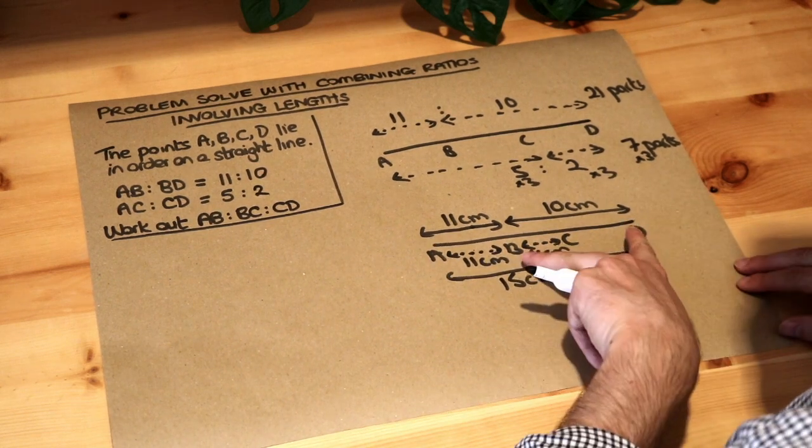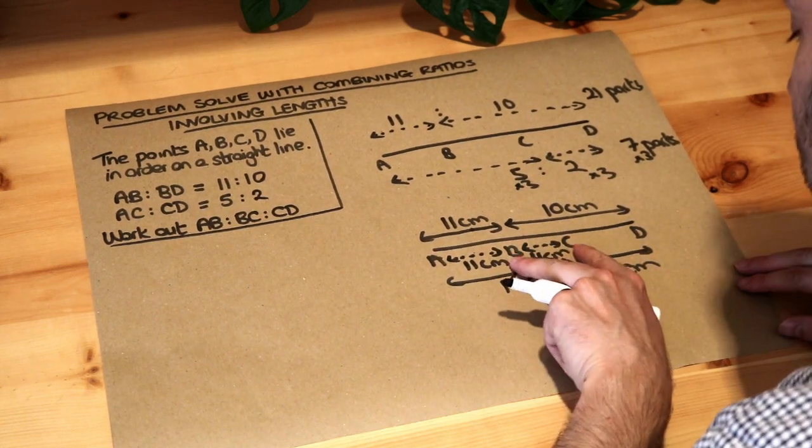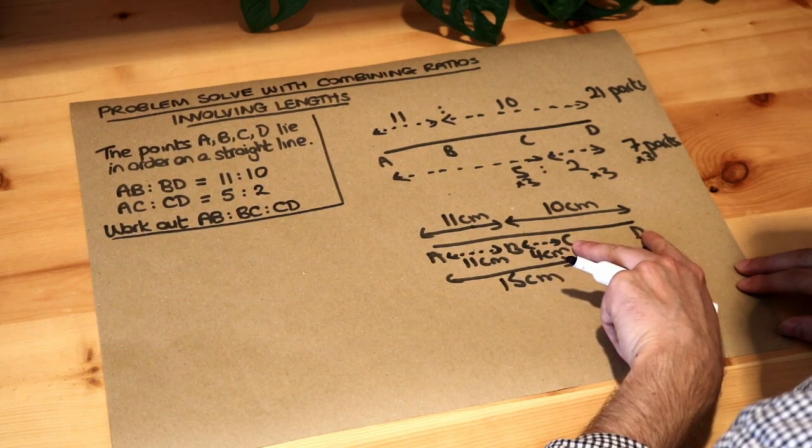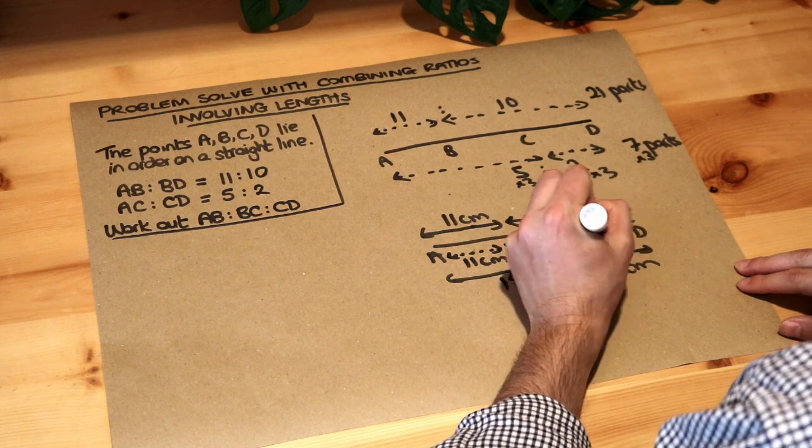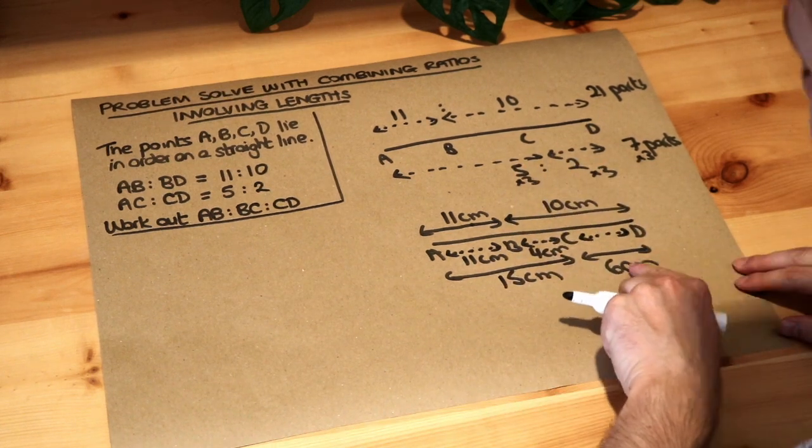And we can do the same over here. If BC is 4 centimeters, what do we add CD to get to 10 centimeters? It's clearly 6 centimeters. Oh, well, we've already got the 6 centimeters - it was already there.